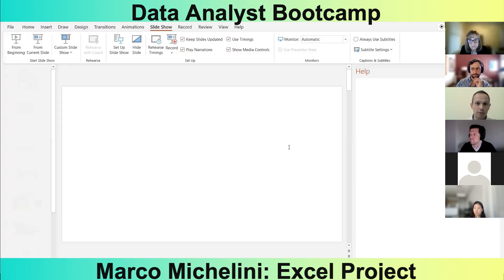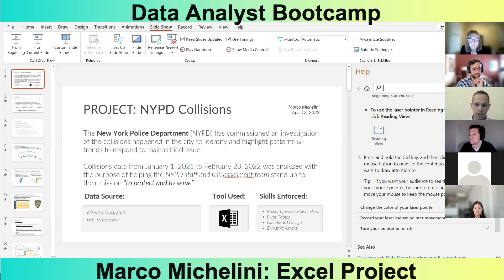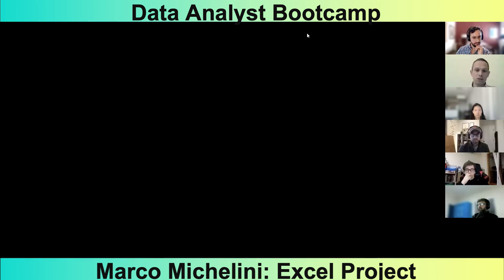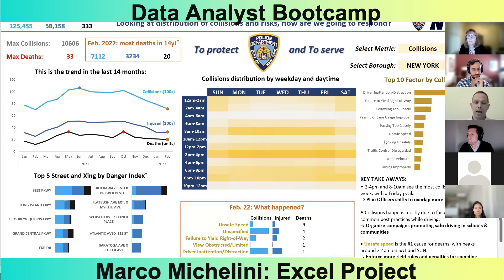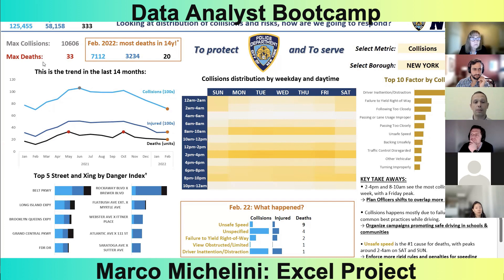Now let's go into the dashboard. The dashboard presents the main information in the top left with collisions, injured, and deaths — the totals throughout the time span. We also highlight the maximum collisions and deaths, which are the two key control points, along with the values for February 2022 to focus attention on what happened in that month.